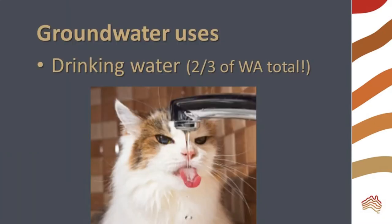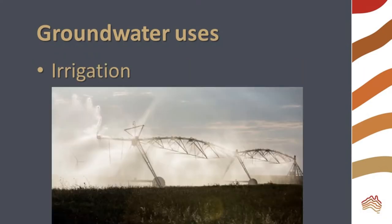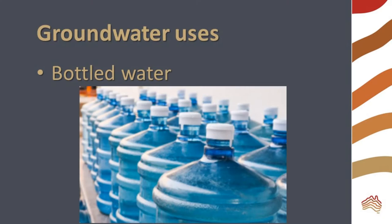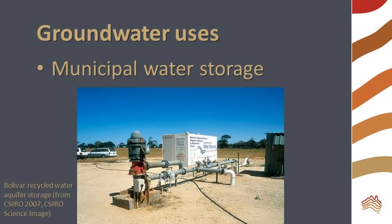We use it for drinking. Approximately two-thirds of Western Australia's drinking water is from groundwater. About half of Australia's groundwater use is for irrigation. We also use groundwater for commercially bottled water and beverages. Underground aquifers can even be used to store municipal water supplies.